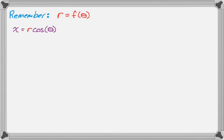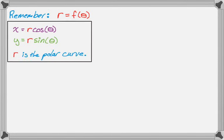x is equal to r cosine theta, and y is equal to r sine theta, and r is just that polar function. So r is the given curve, you have to do that.